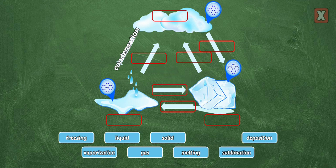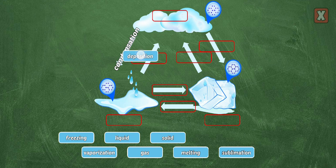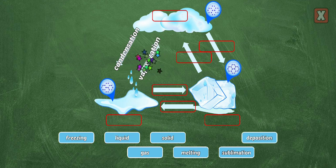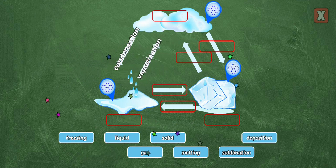Sublimation. Deposition. Vaporization is when a liquid becomes a gas. When heat is added, the molecules move faster.